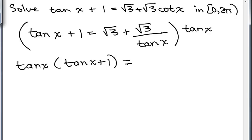And on the right side, I'm going to have √3 times the tan x plus, now when I multiply by the second term, the tan x cancel and I have √3.